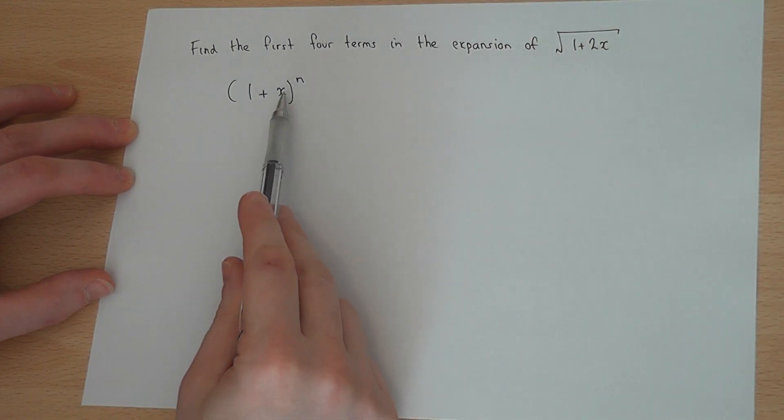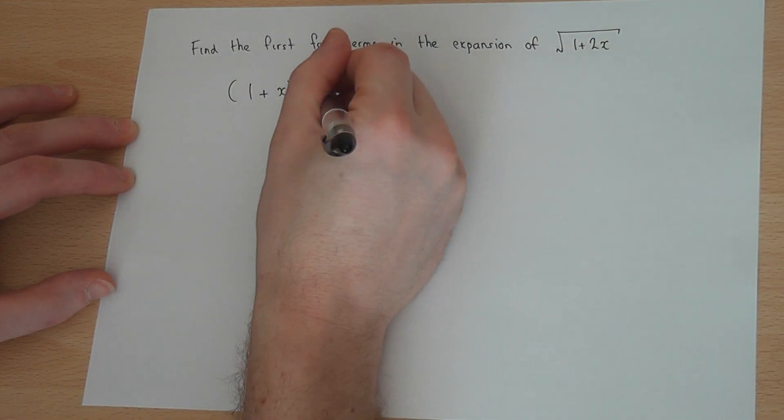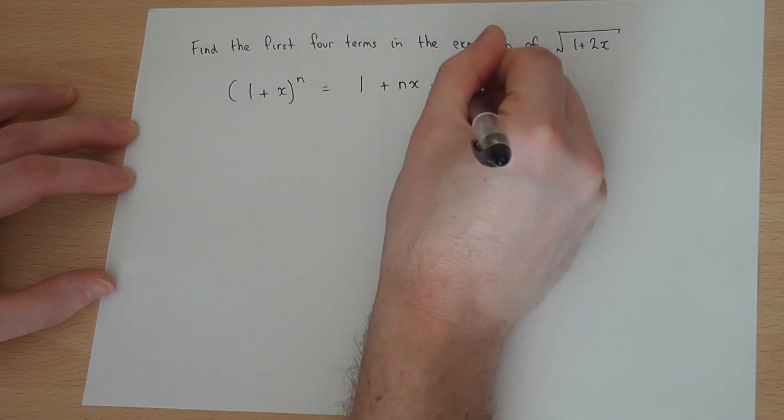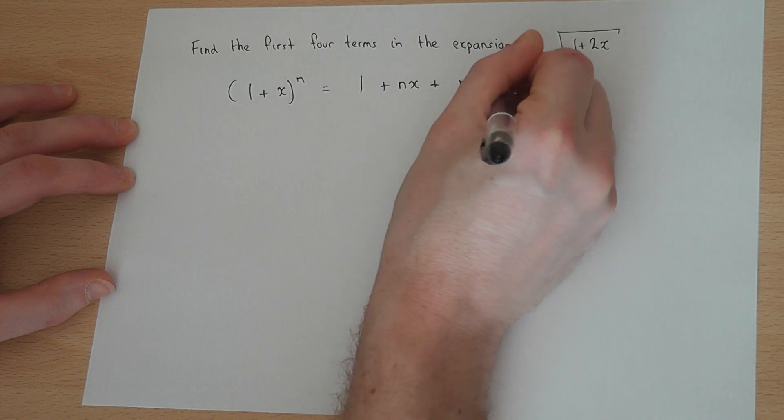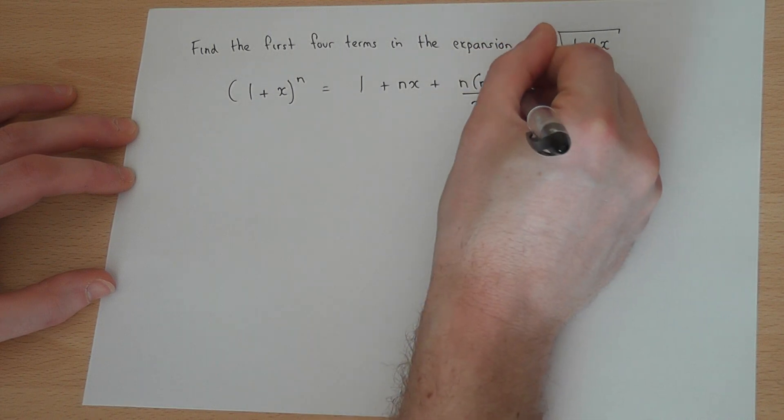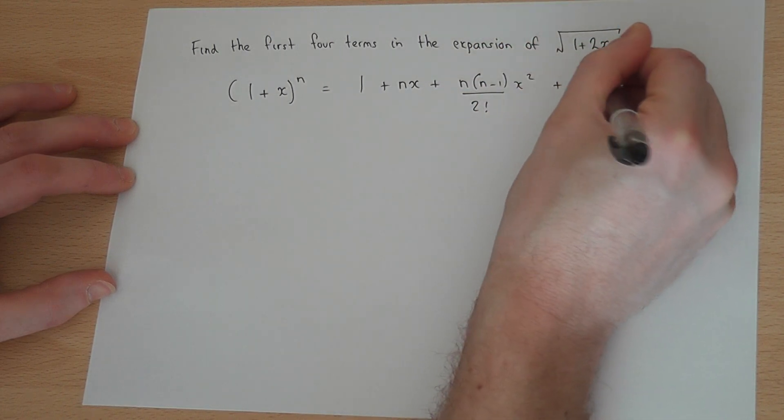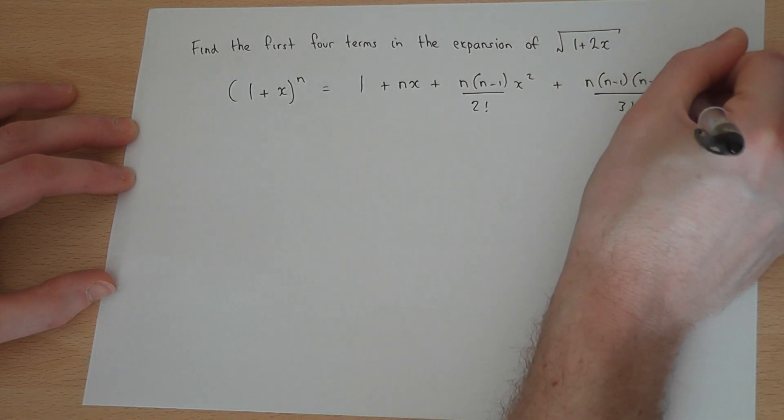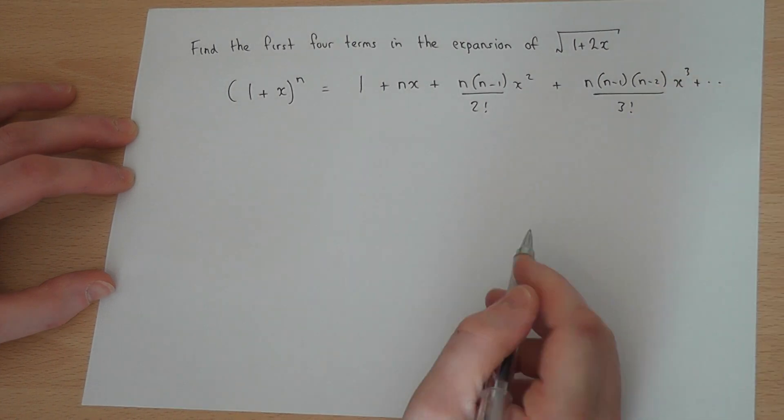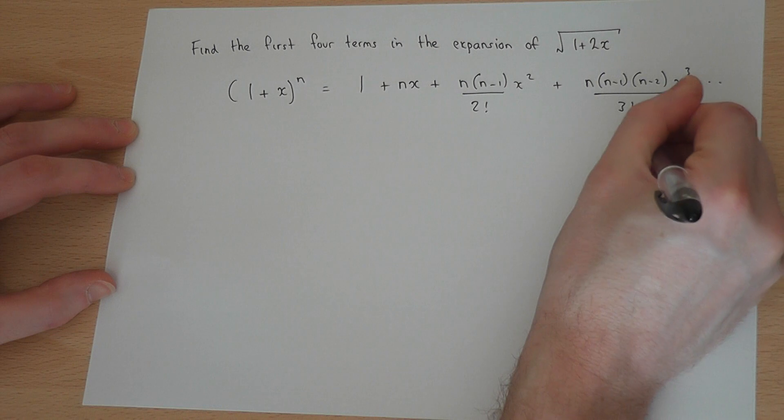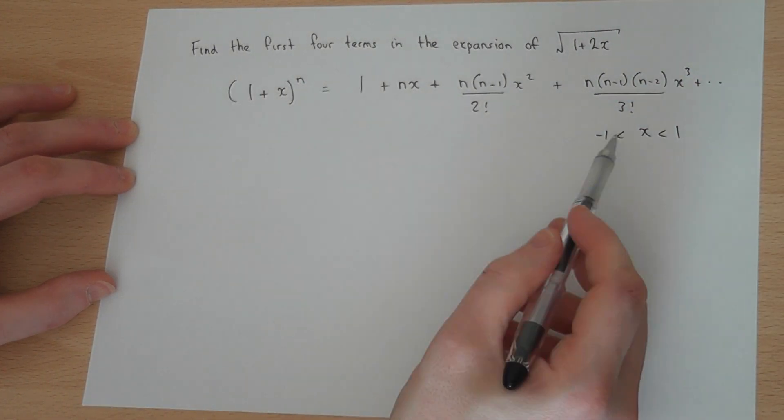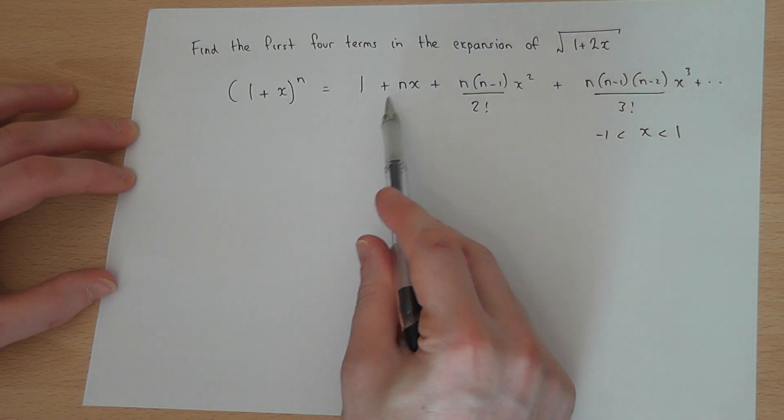Now generally, if we've got 1 plus x to the power of n, then it's 1 plus nx plus n(n-1) over 2 factorial x squared plus n(n-1)(n-2) over 3 factorial x cubed, etc. And this is valid as long as x is between minus 1 and 1. So this condition must hold for this expansion to be valid.